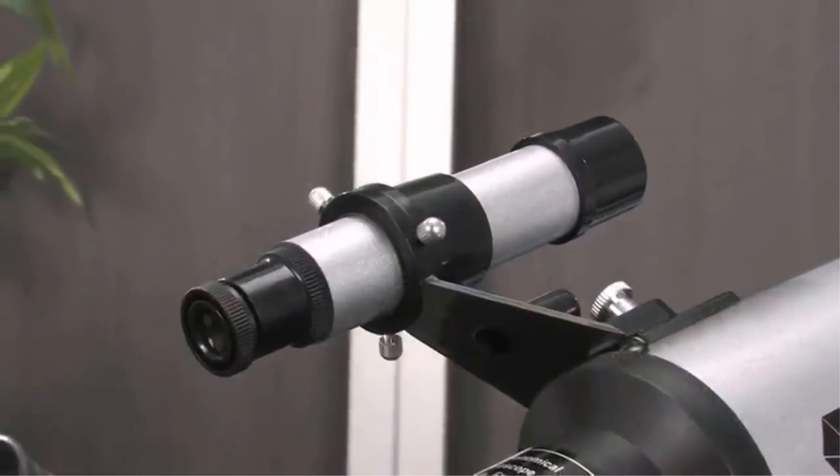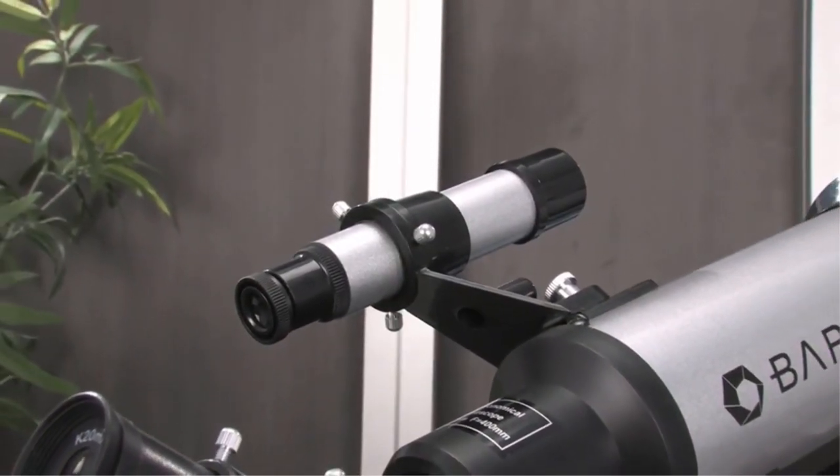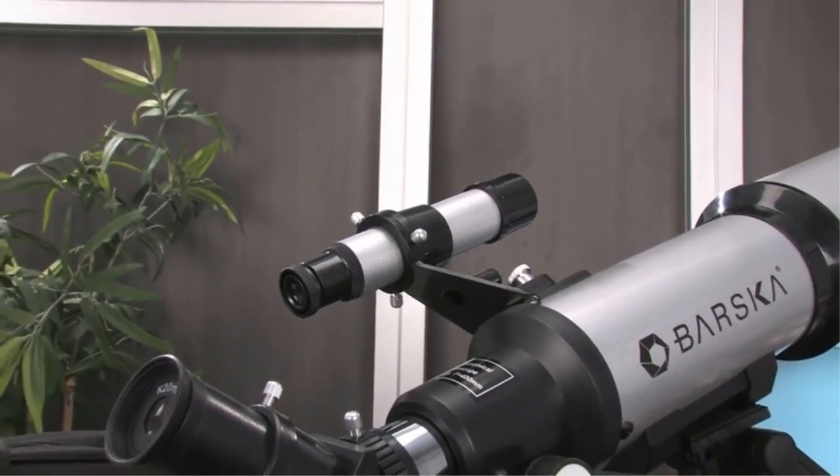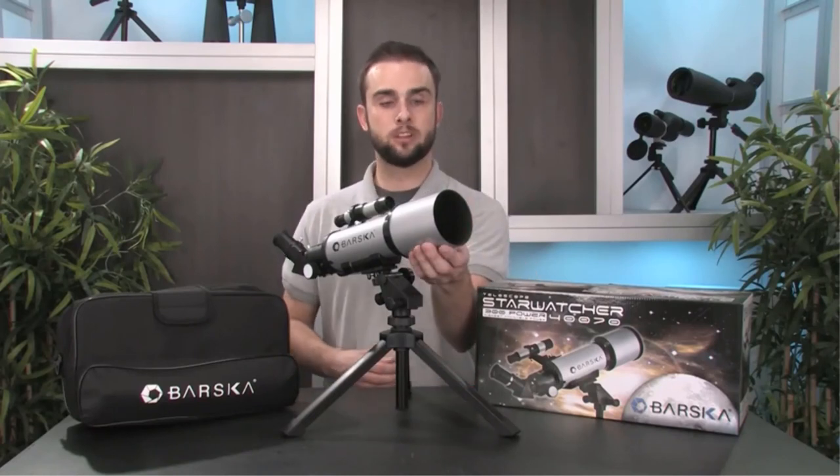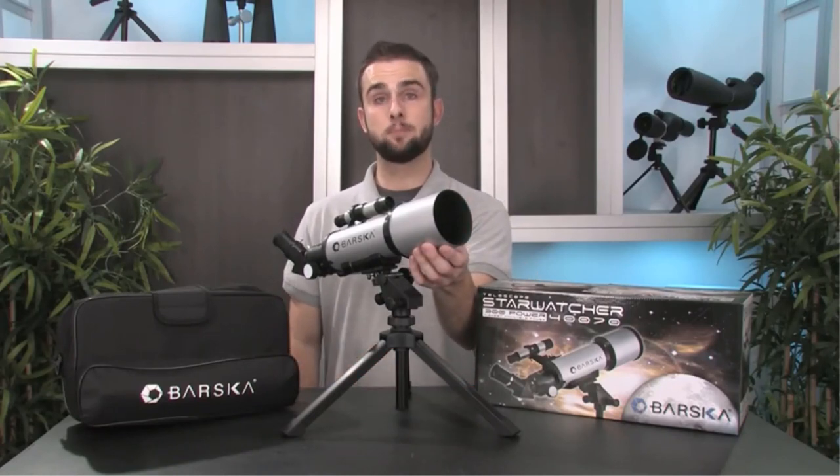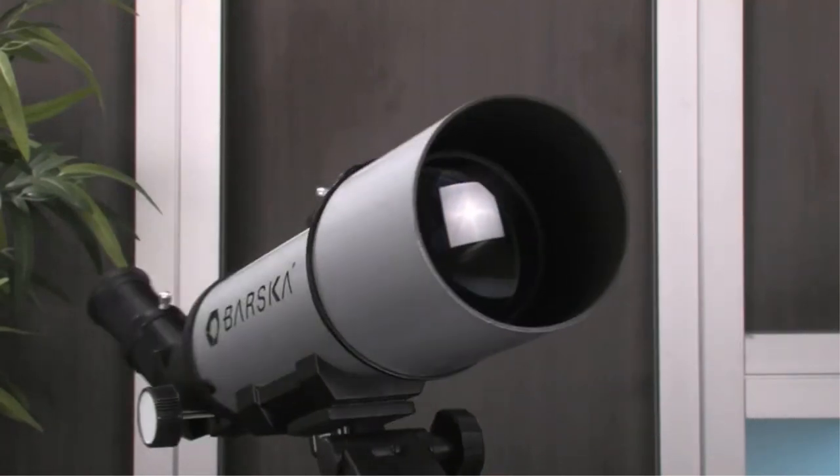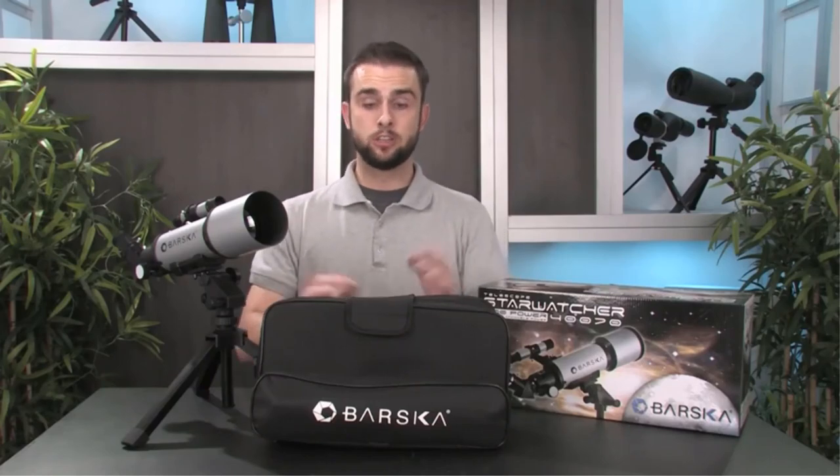The Barska Starwatcher 400x70mm refractor telescope is perfect, as it will not cost too much if you are buying a training telescope to utilize while you learn a little astronomy. It's the situation for a lot of parents upon learning of their children's interest in astronomy—they go out of their way to gratify the budding interest by buying needlessly complicated and expensive refractor telescopes.